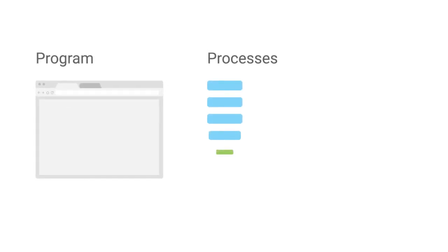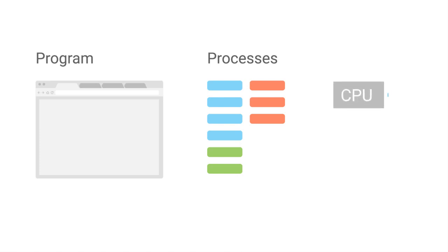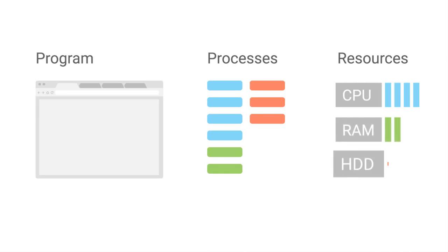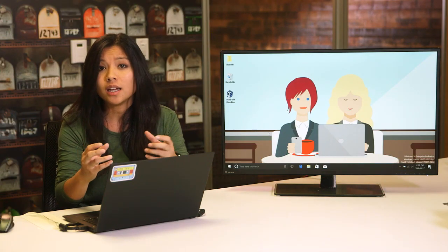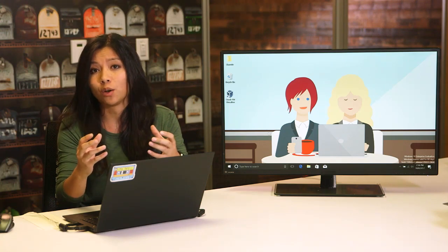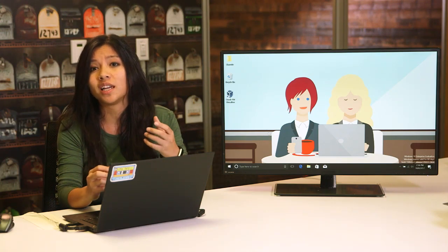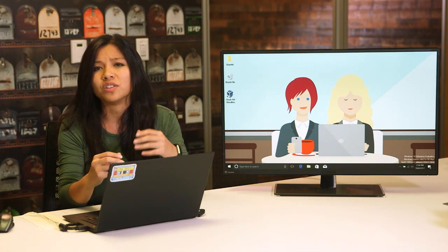When we launch a process, we're executing a program. A program is just software. To calculate the information that our software contains, we need to give it resources so that it can be run. When processes are run, they take up hardware resources like CPU and RAM. Today's computers are powerful enough to handle the processes that we use in our day-to-day activities, like browsing the web, watching movies, etc.